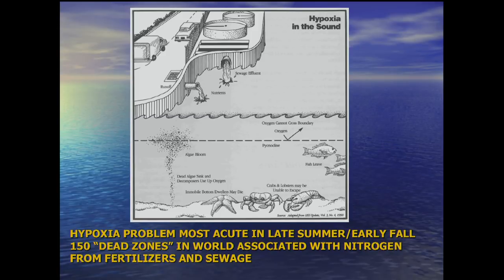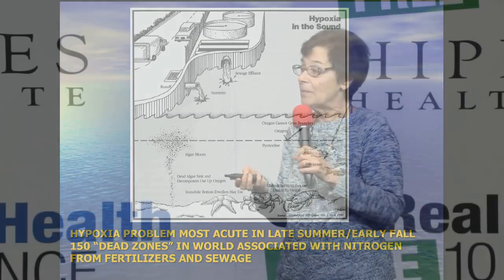Now, what does it do? Here's your inflow of runoff and sewage into the water. It stimulates, as nutrients will do, plant growth — we're talking about the growth of tiny single-celled plants called phytoplankton or single-celled algae. They get fertilized by this and they grow, and you get a bloom. But too much nutrients means too big a bloom.